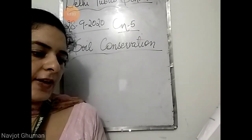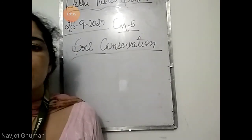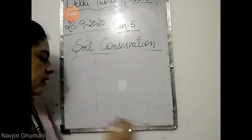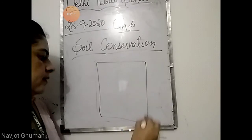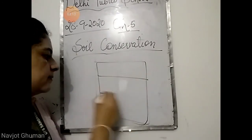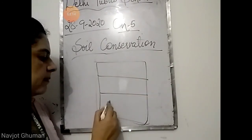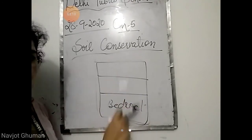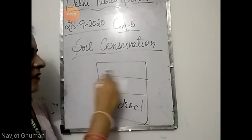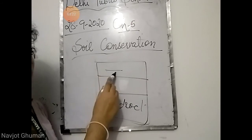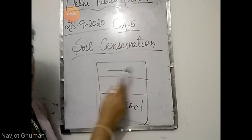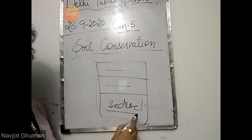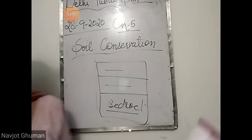With the help of a diagram, describe the three layers of the soil. The three layers are the top soil, subsoil, and bedrock. The first layer contains sand, clay, silt, humus, air, and water. The second layer has smaller pieces of rocks, and the last layer has bigger pieces of rocks.